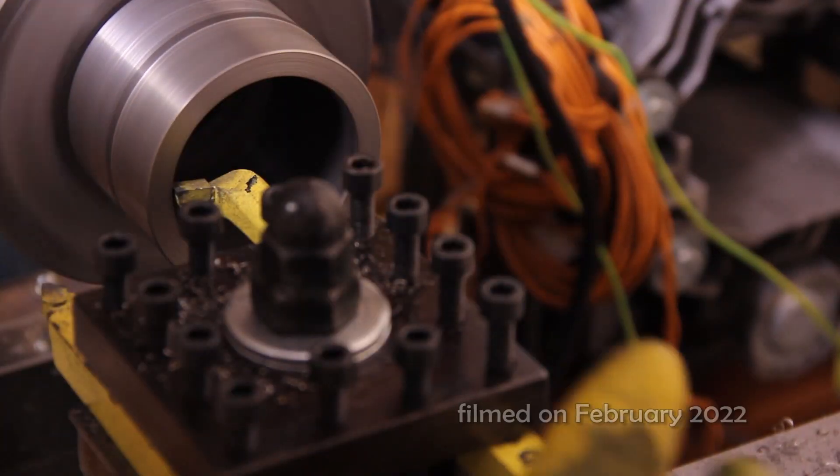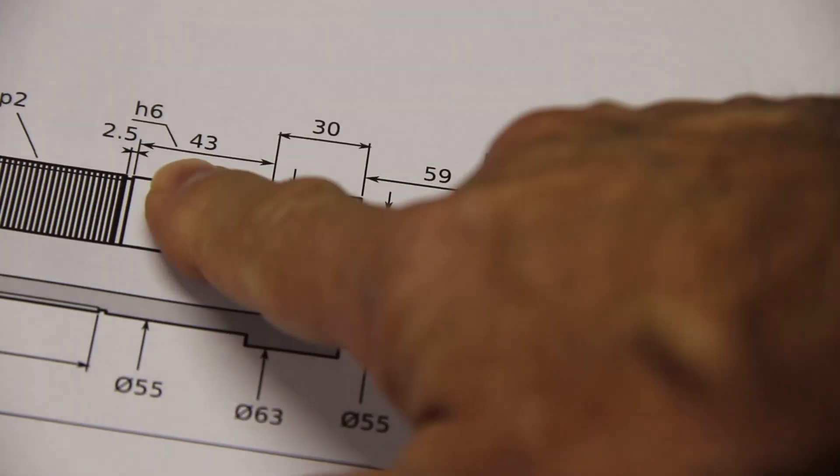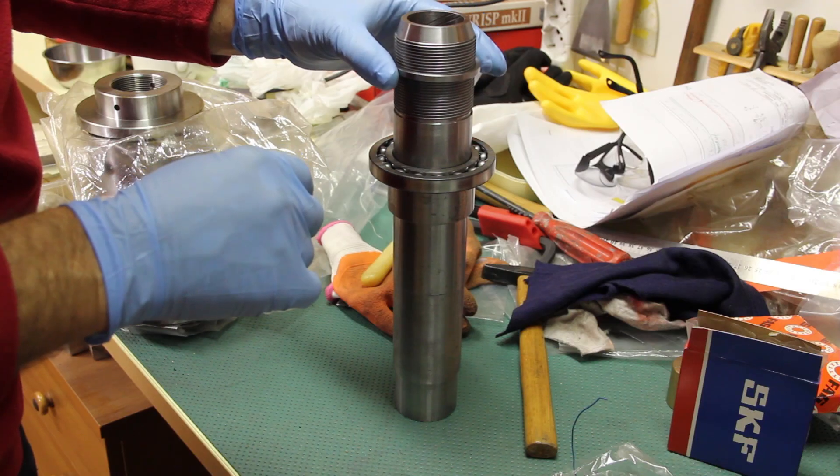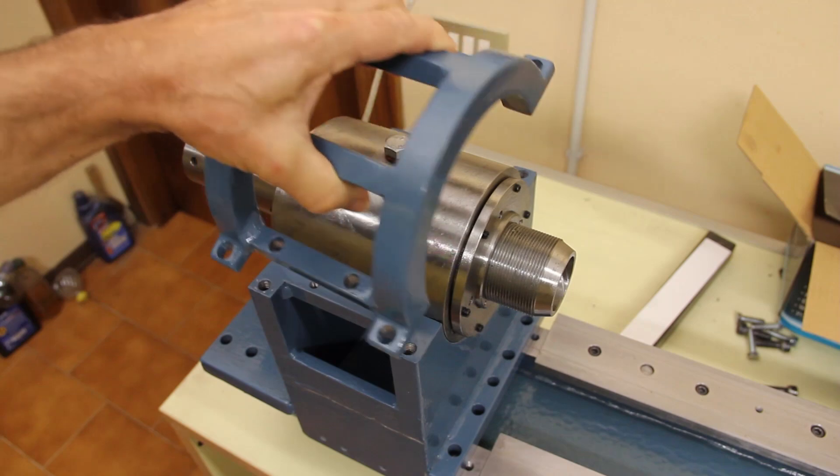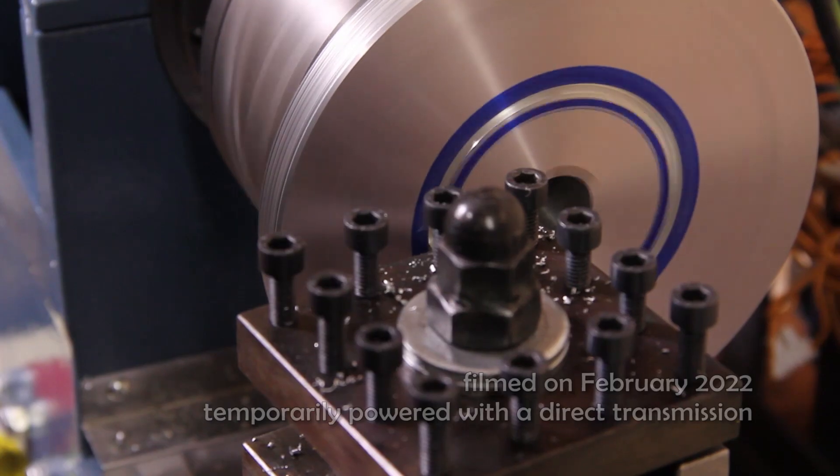A lathe is an enabling machine. Without it, you can't make precision concentric mechanisms. And if you pause for a moment to think about it, it's hard not to be intrigued by that question.